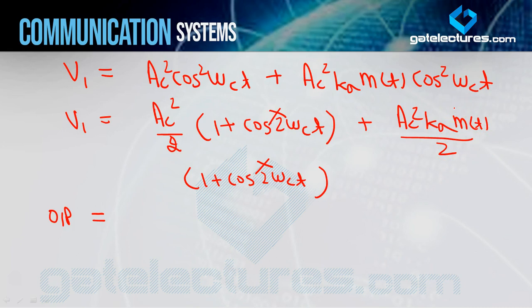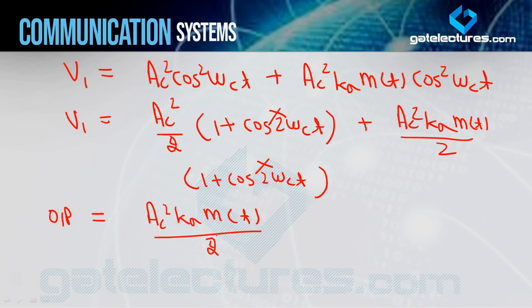Since FC >> FM, the terms with 2FC are rejected by the low pass filter. So AC²/2 passes through and AC²·KA·m(t)/2 also passes — because m(t) has frequency FM. The AC²/2 term is a DC term, and as studied in square law demodulation, the amplifier at the output of every receiver blocks the DC term, so the final output is AC²·KA·m(t)/2, giving us m(t).